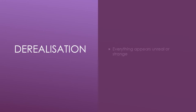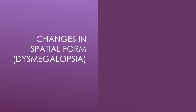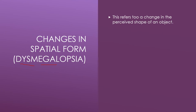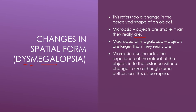What about derealization, where everything appears unreal or strange? In mania, objects look perfect and beautiful. What about changes in shape or spatial forms — called dysmegalopsia? This refers to a change in the perceived shape of an object. Micropsia means objects appear smaller than they really are. Macropsia or megalopsia means objects appear larger. Macropsia also includes the experience of objects retreating into the distance without change in size — some authors call this porropsia — where you watch something and it keeps going further away without changing size.